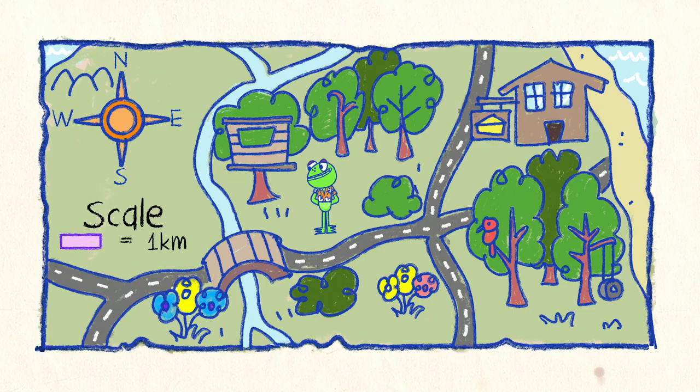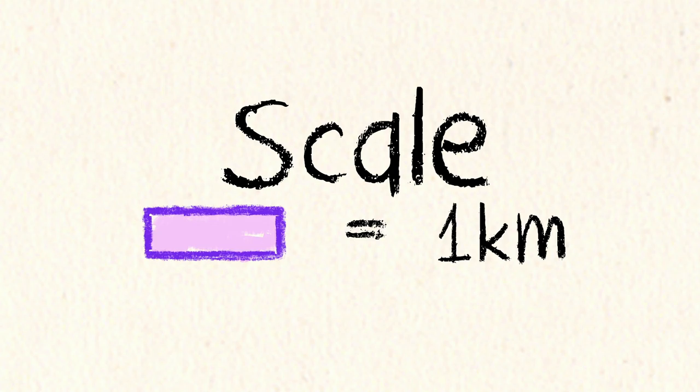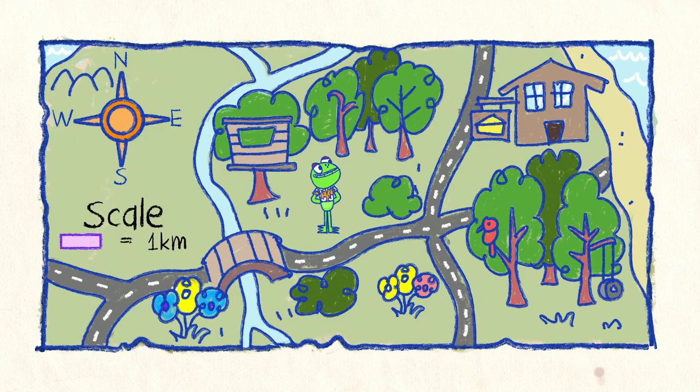On your map, you should also find a unit of scale. This tells us what distance we have to go. It means one of these on the map is equal to this distance on the ground.